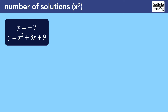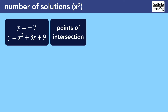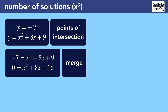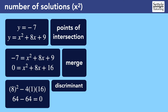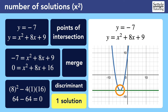The SAT often asks for the number of solutions to a system of equations that includes a quadratic equation. In these situations, the SAT is really asking for the number of intersection points between the two graphs. To solve using the discriminant, we would first need to merge the two equations by substituting negative seven into y. Then we need to rearrange the equation so that it's equal to zero. Now we can plug the values of a, b, and c into the discriminant formula. Simplify and we find that the discriminant is equal to zero, which means the system of equations has just one solution. Again, Desmos would have made this question much easier — just graph both equations and we can see that they intersect at one point. In this case, the intersection is also the vertex of the parabola. This is a shortcut that occasionally makes these SAT questions easier, but it only applies when the system includes a perfectly horizontal line.